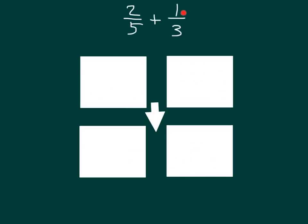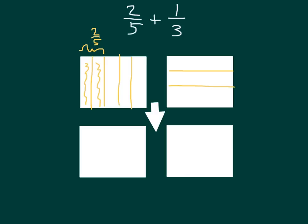For this problem, we are looking at 2 fifths plus 1 third. You'll notice that we do not have like units. Let's take a look at 2 fifths first. We'll divide this first rectangle into fifths by drawing four lines. We have 1 fifth, 2 fifths, 3 fifths, 4 fifths, and 5 fifths, and we will be looking at 2 of those fifths. To model 1 third, we drew the fifths vertically, so we will draw these ones horizontally for 1 third. We divide it into 3 parts, and then we're looking at one of those parts. So this here is 1 third.